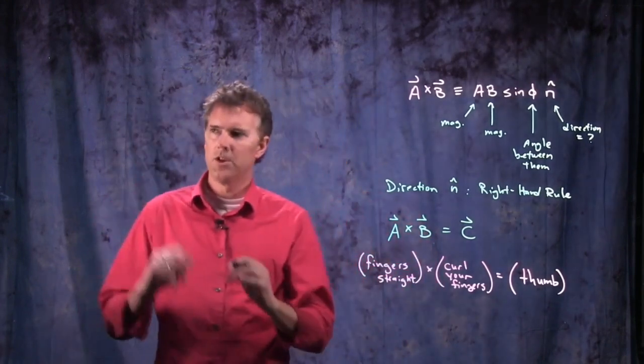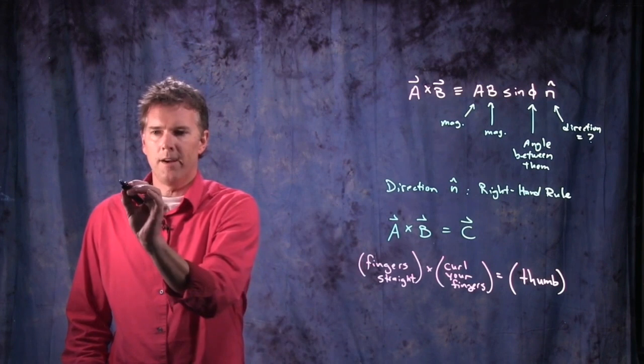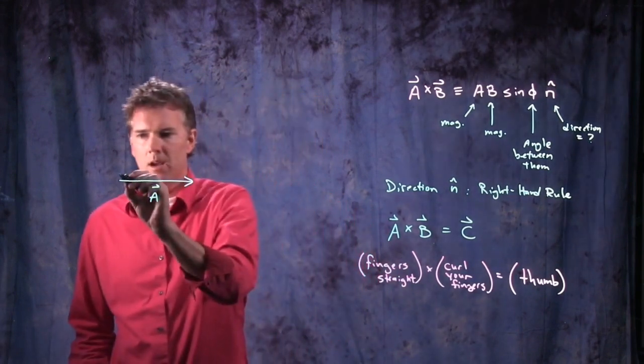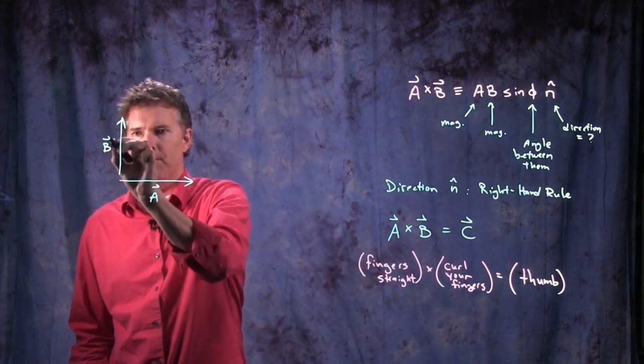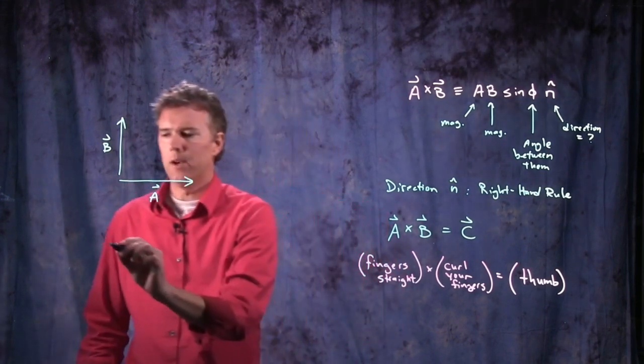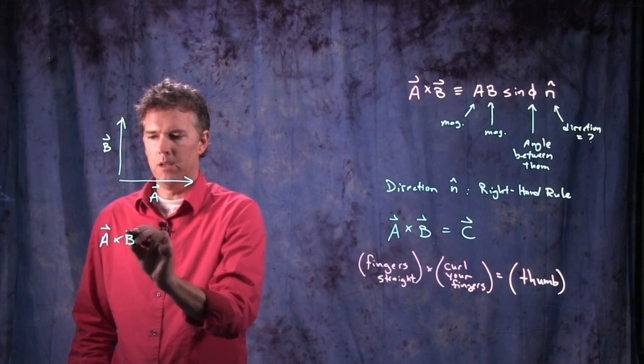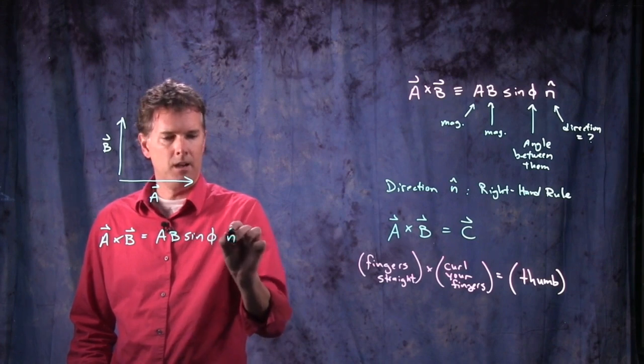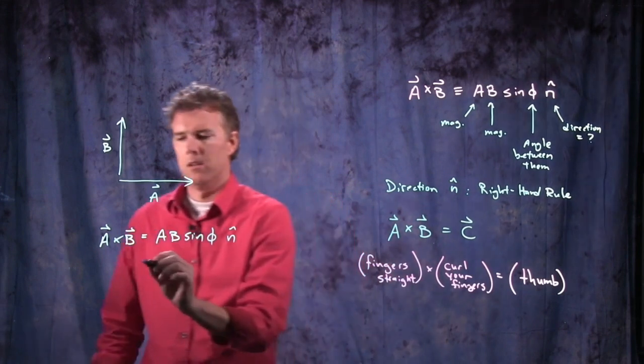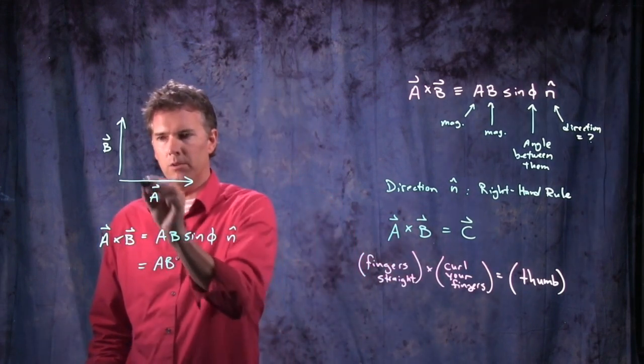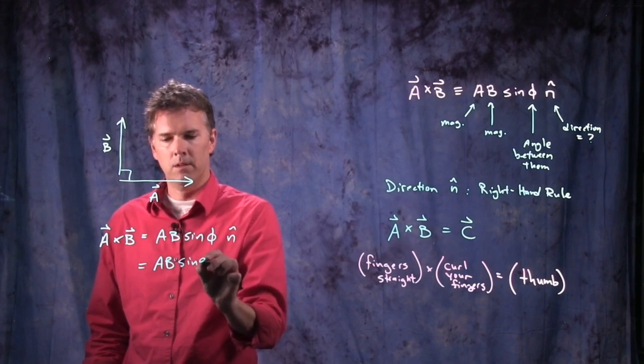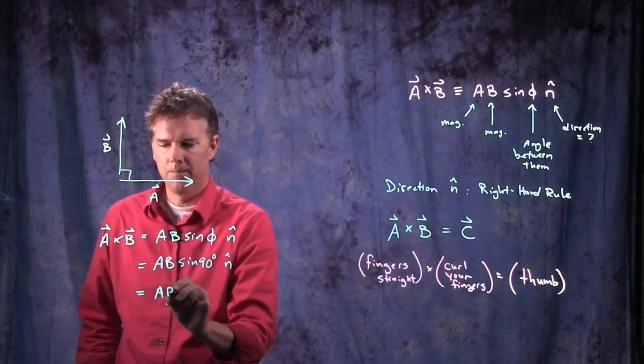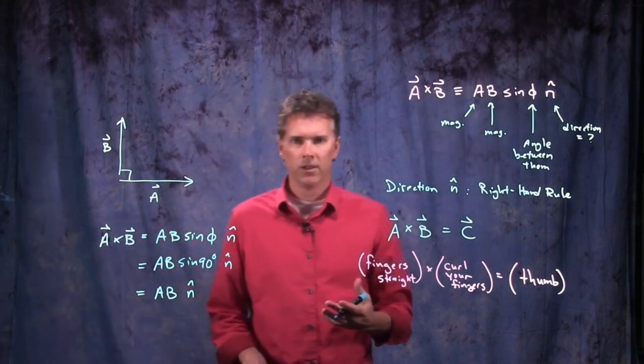Okay, if we just have two vectors, and I'm going to change the order slightly. Let's say we have vector A pointing to the right, and we have vector B pointing up. What is A cross B? A cross B is going to be magnitude of A, magnitude of B times the sine of the angle between them with a particular direction. But the angle between these two is a right angle, and so we get sine of 90 degrees, and so we just get AB, and that sine of 90 degrees is, of course, 1.